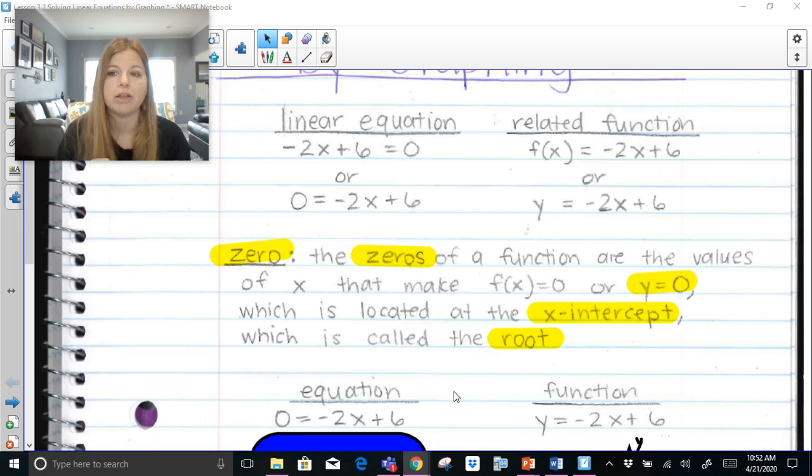The zero of a function are the value or values of x that make f(x) = 0 or y = 0, which we already know. When you calculate y = 0, you're really figuring out the x-intercept. And another name for that x-intercept is called the root. So the zero of a function is the x-intercept. The way we find the x-intercept is we set y = 0, and we call that x-intercept our root. They're all connected to each other.